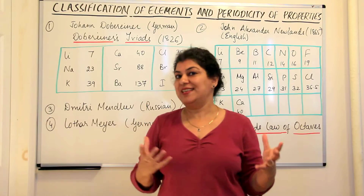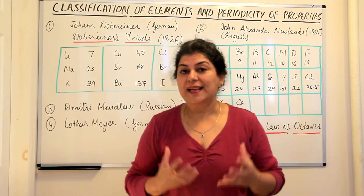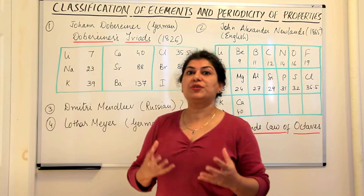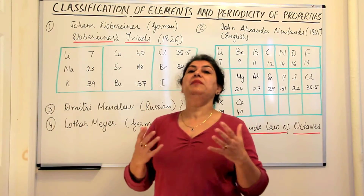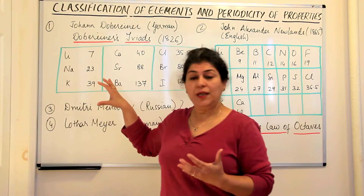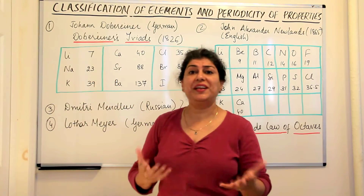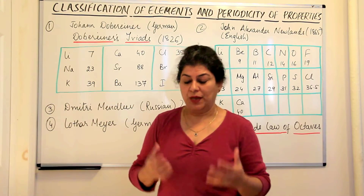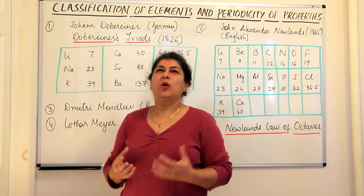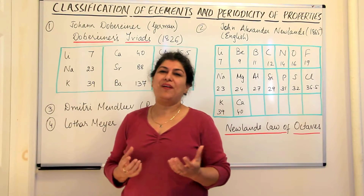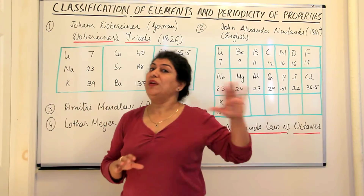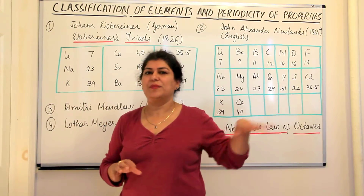These triads were very fascinating. But the problem was that Dobereiner could not make any more triads than these three — he could make only three triads. Therefore, this attempt at classification simplified it only to these nine elements, but we had 31 elements.